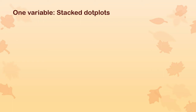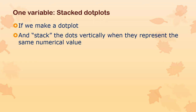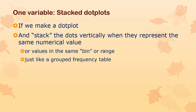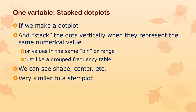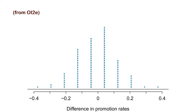Another way to represent one variable is really similar to a stem plot, except instead of using digits, we just use a dot — so in a sense we've actually lost some information. In a dot plot, we stack the dots vertically when two dots fall in the same bin. It's just like a grouped frequency distribution, just like a stem plot. And we can see the shape — where the center and lump are, where there's skew, whether things are spread out or clustered together.